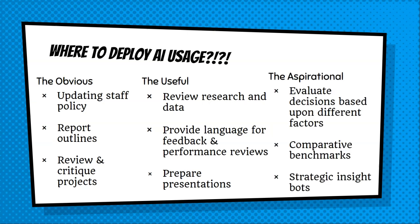There are also more robust uses. For instance, leverage AI to provide different analyses of decisions or strategies to get a fuller understanding of impact. Leaders can also use it to identify and develop benchmarks with other comparative institutions. Finally, with the rise of AI bots, you can create strategic advisors — bots that use different sources such as your strategic plan and institutional mission to provide timely and critical insight about different questions and pathways you're creating in your role.